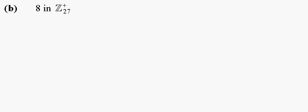We will now proceed to find the multiplicative inverse of 8 in Z27. Let us first start by finding the greatest common divisor of 8 and 27 by using the Euclidean algorithm.